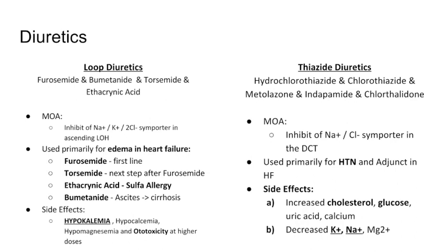Thiazides have a few side effects to know. Similarly to loops, they can decrease potassium, sodium, and magnesium — hypokalemia being the most concerning, as it's most life-threatening. But they can also increase cholesterol and glucose. It's not totally clinically relevant, but some practitioners consider whether to use a thiazide in a diabetic patient because it could worsen hyperglycemia. They do like to test this.